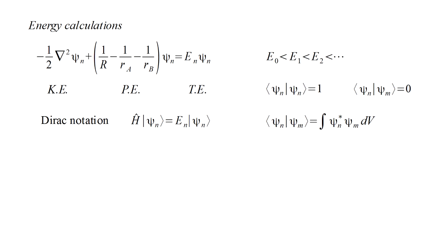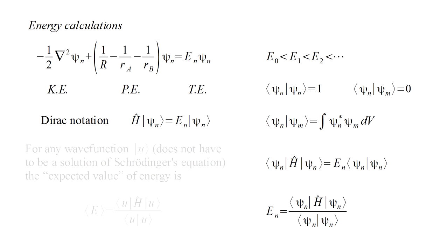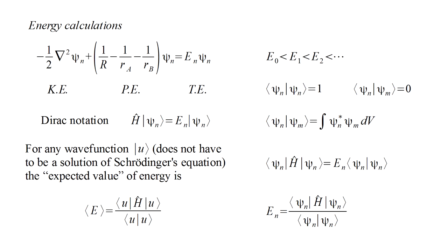To calculate this projection, we sum a product of the two wave functions over all space. Let's take the Schrödinger equation and project both sides onto the wave function. We can solve this for the energy Eₙ. If we apply this formula to an arbitrary wave function U, we get a formula for the expected value, or average, of the energy of that wave function.